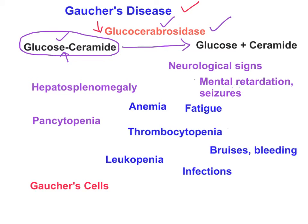Among all lysosomal storage disorders, Gaucher's disease is the most common, and epidemiologically it is most common in the Ashkenazi Jewish population. Signs and symptoms include hepatosplenomegaly — enlargement of the liver and spleen — because glucosylceramide accumulates in hepatocytes and in macrophages of the splenic sinusoids and reticuloendothelial system.